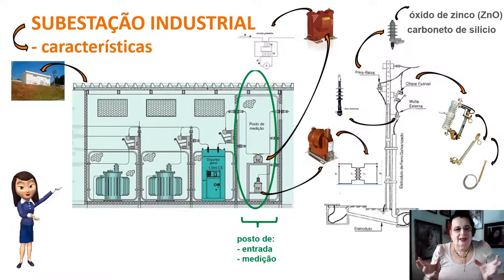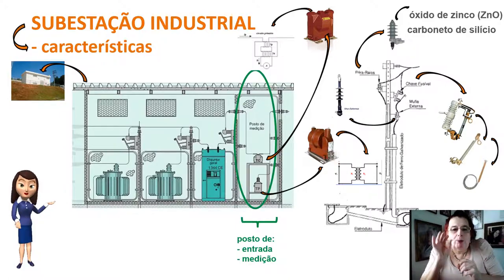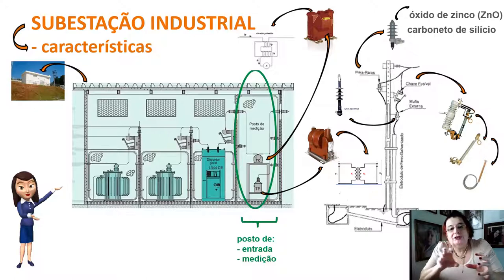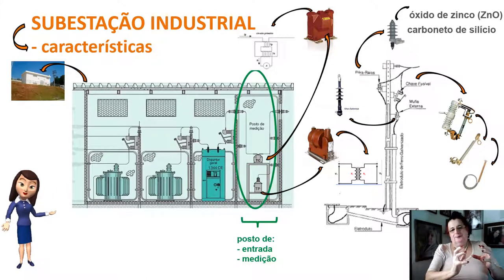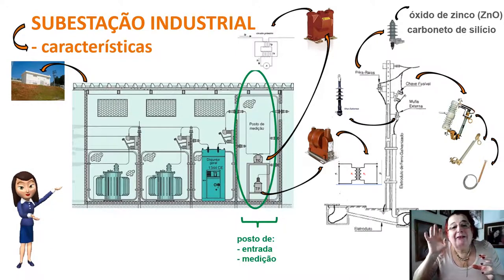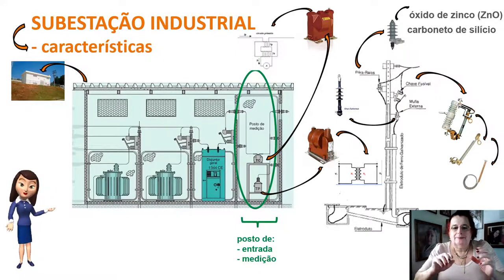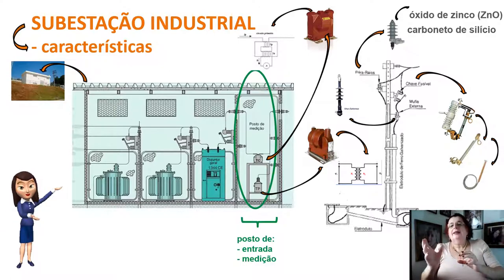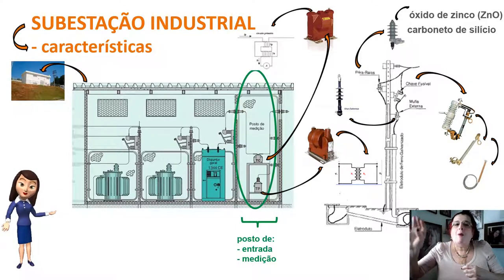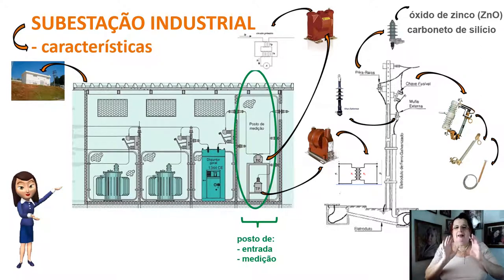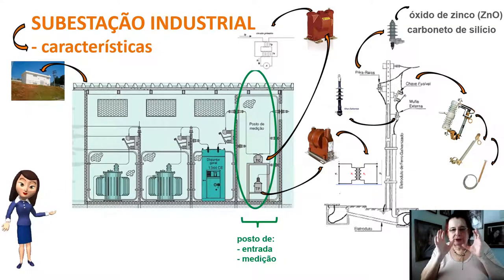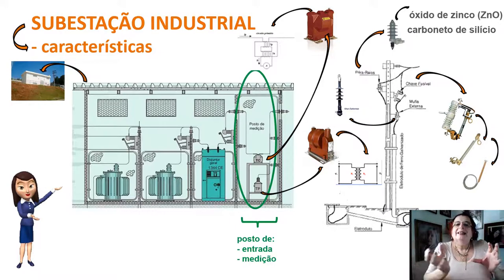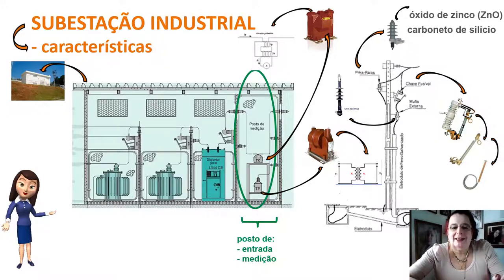O TP recebe os 13 mil volts e rebaixa a tensão para alimentação de outros elementos dentro da própria subestação, e também avisa ao voltímetro qual é a tensão de entrada. Temos também o transformador de corrente (TC), que mensura qual é a corrente consumida pela indústria, alimentando o amperímetro para que meça essa corrente consumida.